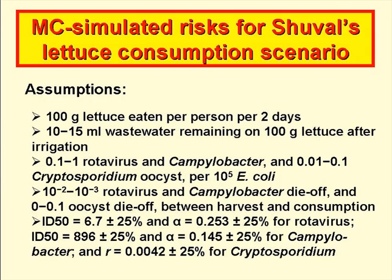For unrestricted irrigation, the slide shows the range of values chosen for each parameter in the QMRA calculations. There was one fixed value — 100 grams of lettuce per person per two days — and the range of values for the others was 10 to 15 ml of wastewater remaining on 100 grams of lettuce after irrigation. For every 10 to the 5 E. coli in the wastewater, there were 0.1 to 1 rotavirus and Campylobacter, and 0.01 to 0.1 Cryptosporidium oocysts. Die-off between the last irrigation and consumption was 10 to the minus 2 to 10 to the minus 3 for rotavirus and Campylobacter, and 0 to 0.1 for oocysts. The pathogen constants in the dose-response equations were allowed to vary by plus or minus 25%.